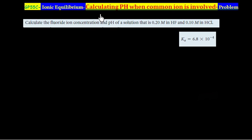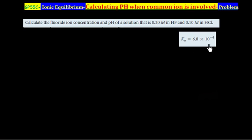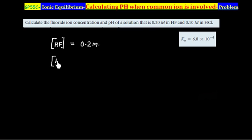This problem illustrates the concept of the common ion effect. We need to calculate the fluoride ion concentration and pH of a solution that is 0.2 M in HF and 0.1 M in HCl. HF is a weak acid and its dissociation constant is also given. We have concentration of HF as 0.2 M and concentration of HCl as 0.1 M.